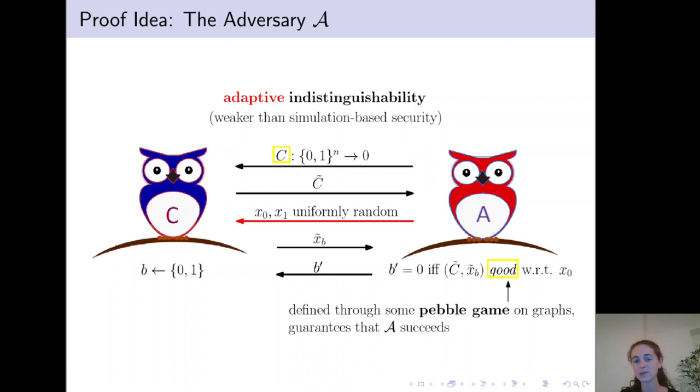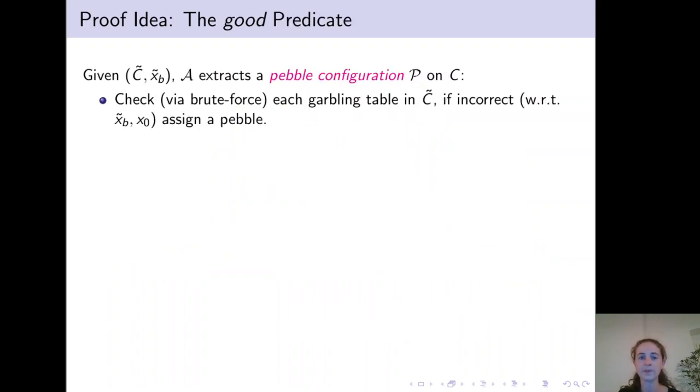And we will define this good predicate through some pebble game on graphs. More precisely, given the garbled circuit and the garbled input, the adversary extracts some pebble configuration on the circuit. The adversary does this by brute force breaking all the encryptions contained in the garbling table and checking whether they are correct with respect to the input keys it learns during evaluation of C tilde on input XB tilde, and with respect to the bits that would run over these wires when C is evaluated on X0.